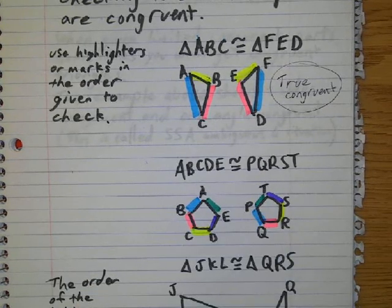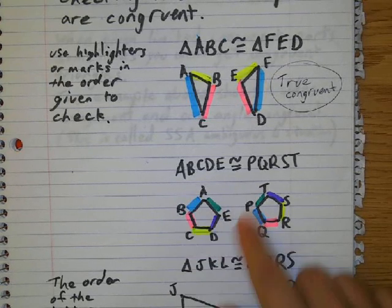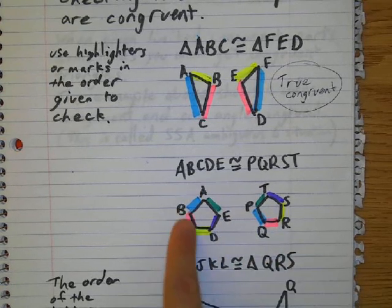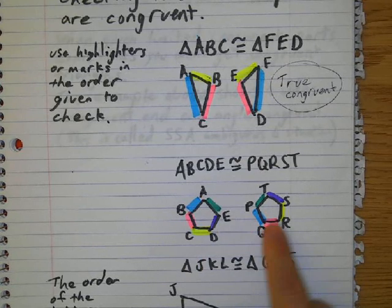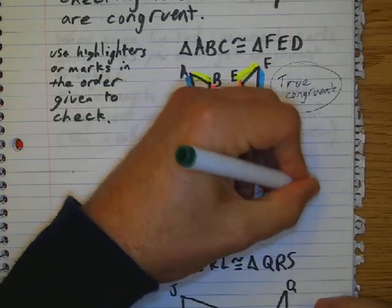So all the letters, it looks like it's rotated a little bit, but they all go around in the correct order. Blue, pink, yellow, purple, green. So this is true congruent.